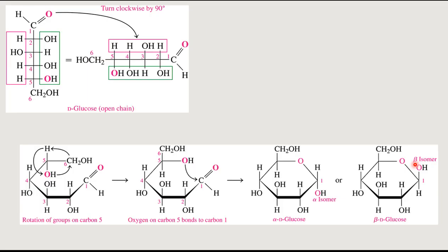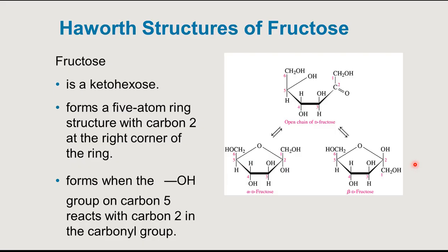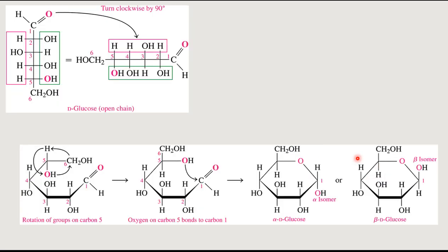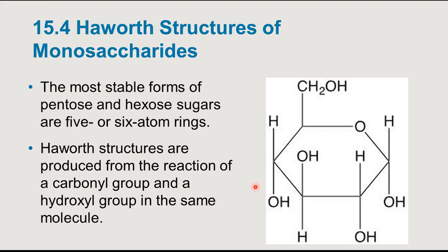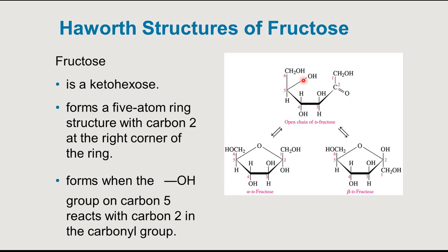This cyclization can happen with both aldo-hexoses such as glucose and keto-hexoses such as fructose. With keto-hexoses like fructose, we end up with a five-membered ring instead of a six-membered ring, because the hydroxyl from carbon 5 attacks the carbonyl on carbon 2. We still end up with a hemiacetal carbon (anomeric carbon), and the hydroxyl orientation — below or above the ring — indicates whether we have alpha or beta fructose.